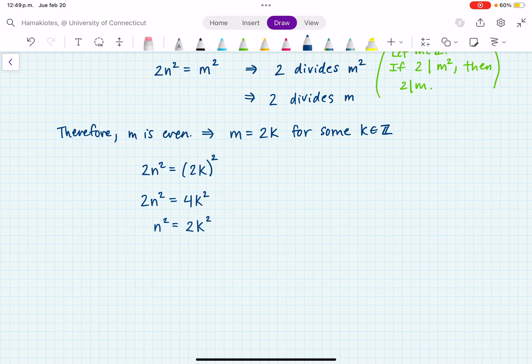Now what do you notice? n squared equals 2 times a number. So this tells me that 2 divides n squared. And since 2 divides n squared, it follows that 2 divides n. So that tells me that n is even.